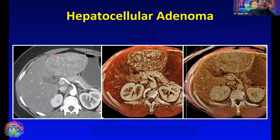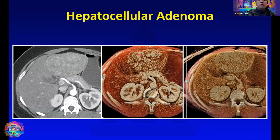Here is an example of a hepatocellular adenoma. Even on the arterial phase, you can appreciate that the enhancement pattern is more heterogeneous compared to the focal nodular hyperplasia shown previously, and that is a good feature in distinguishing larger adenomas from FNHs. On the cinematic arterial phase, you can appreciate that heterogeneous enhancement pattern that becomes more homogeneous on the venous phase.